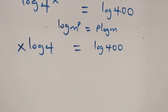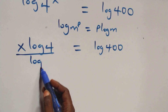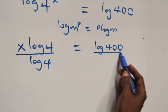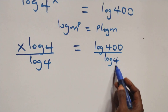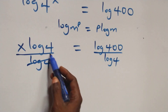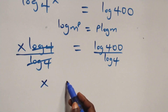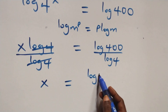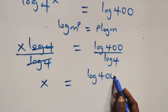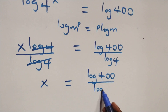Then here we divide both sides by log 4. We divide this side by log 4 and also divide this side by log 4, which implies log 4 cancels each other.